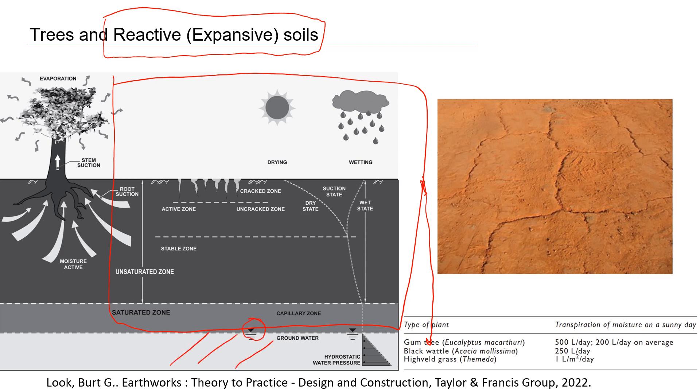Water is here. This part is saturated. Then we have some capillary zone. If we have clay material, and usually reactive soil or also called expansive soil, it's mostly very high plasticity clay.